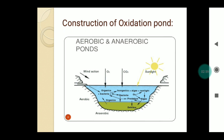Regarding the construction of the oxidation pond, this diagram shows the actual construction. There are two parts: the upper part involves the aerobic process, and the bottom of the pond involves the anaerobic process. Oxygen is introduced at the surface depending on the quantity of oxygen available in the pond. At the bottom of the pond, there is a deficiency of oxygen, so decomposition occurs in the absence of oxygen — this is called anaerobic digestion or decomposition.